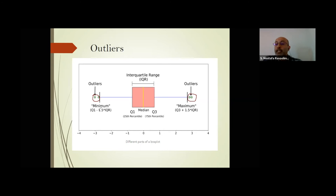To detect outliers, we calculate the 25th percentile (Q1) and 75th percentile (Q3) — quartile one, two, and three. Based on these values, we can calculate and detect outliers. What do Q1, Q2, and Q3 mean? This relates to the number and frequency of cases up to a specific value.